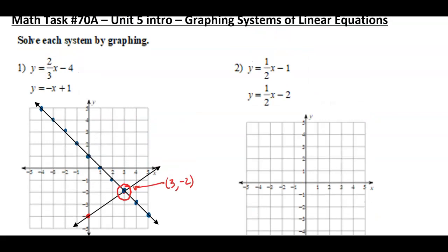And if you plug in to both of these equations, you'll notice that you'll get a true statement. I take my x-y combo of 3, negative 2, and I plug it into my first equation. I get negative 2 is equal to 2/3 times 3 minus 4.